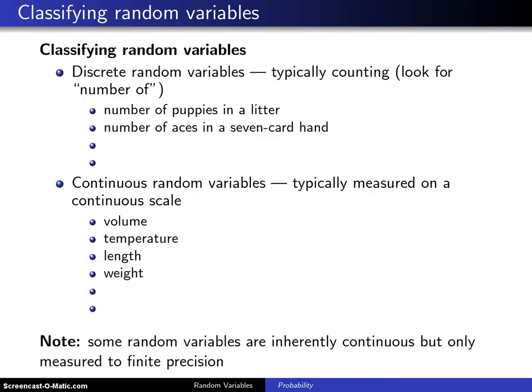Discrete random variables are typically counting variables, and oftentimes you can look for the words 'number of' in a particular problem, such as number of puppies in a litter, number of aces in a seven-card hand, or number of points on an exam. I'll leave one blank here for you to fill in.